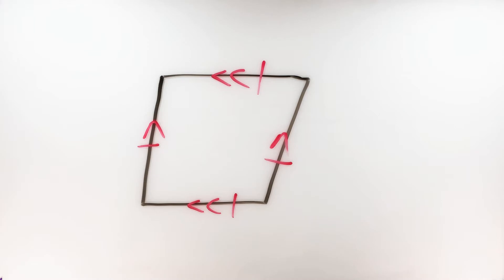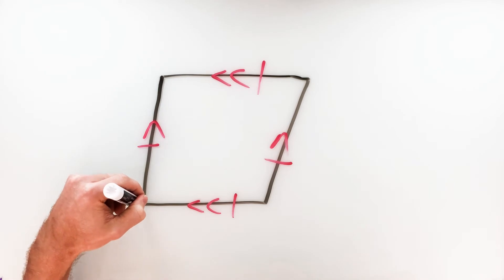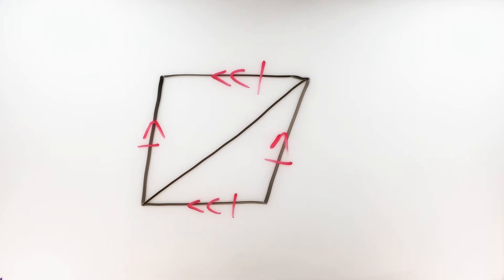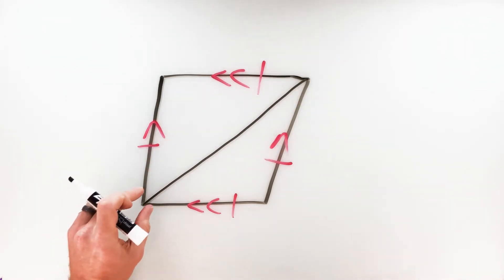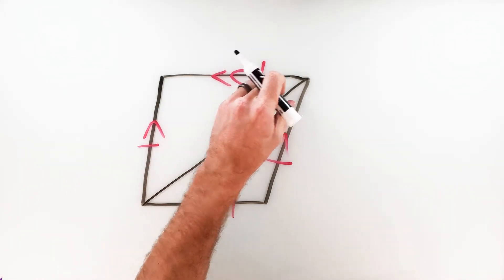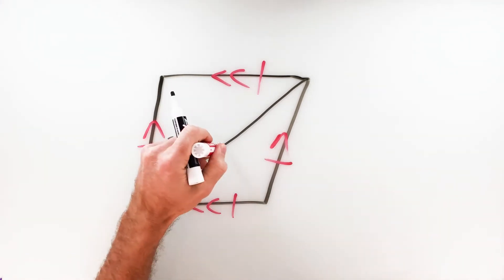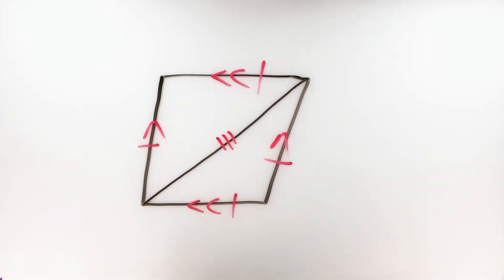Property number one: in a rhombus, the diagonals — a diagonal being a segment that connects two non-adjacent vertices — will bisect two angles of that rhombus. This diagonal through the middle will bisect the two angles at those two vertices. This is fairly simple to prove. When we draw that diagonal, we cut this rhombus into two triangles, and because of the reflexive property, we can mark that middle side as congruent to itself.